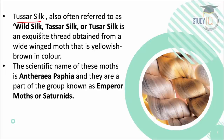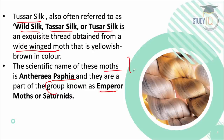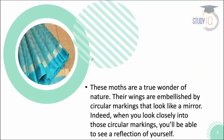Coming back to the topic, we are talking about Tassar silk, which is also known as wild silk. The thread comes from a wide-winged moth that is yellowish-brown in color. The scientific name of the moth is Antheraea, and this group is part of the emperor moths family, Saturniidae. This is a little biological background on where the silk comes from.